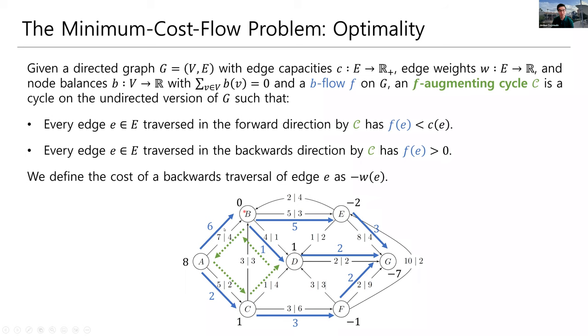But then in the next two edges, we're going backwards, right? From D to B, that's opposite the direction of the edge, so we're going backwards. And same with B to A. And we're allowed to go backwards on these two edges because there is positive flow on both of them. So this becomes an f-augmenting cycle.